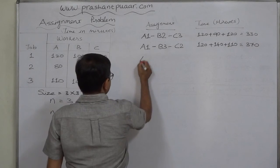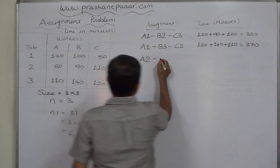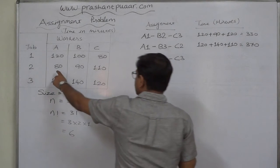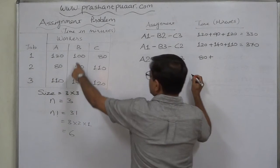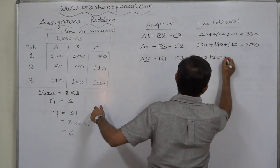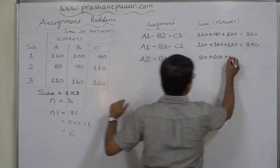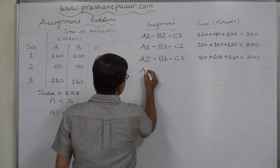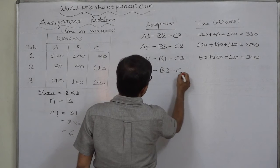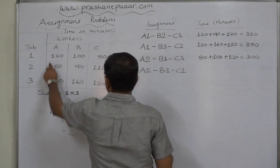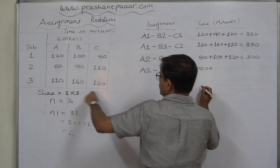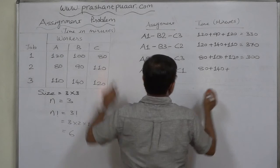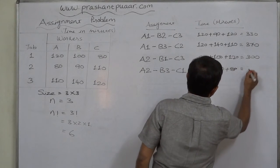Third assignment: A is given job 2, B is given job 1, and C is given job 3. Time is 80 minutes for A, plus 100 minutes for B, plus 120 minutes for C — total 300 minutes. Fourth assignment: A gets job 2, B gets job 3, and C gets job 1. Time is 80 minutes for A, plus 140 minutes for B, plus 80 minutes for C — total 300 minutes.